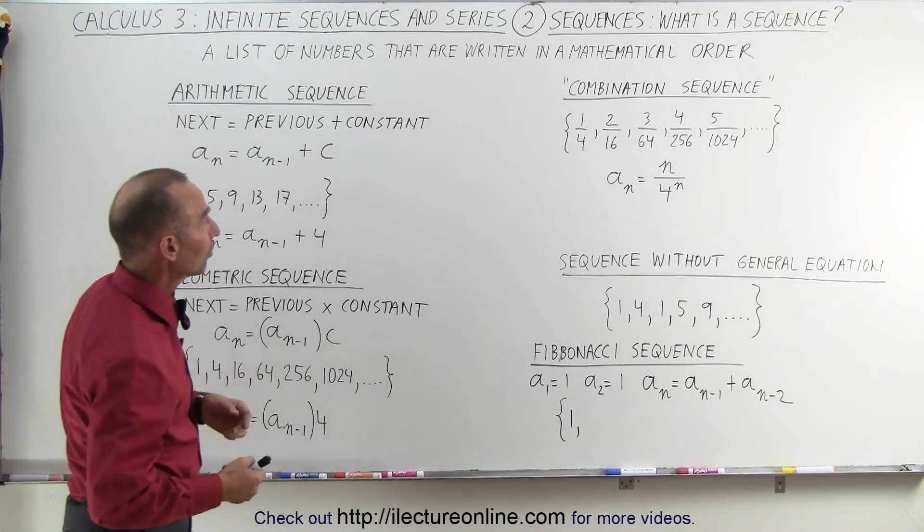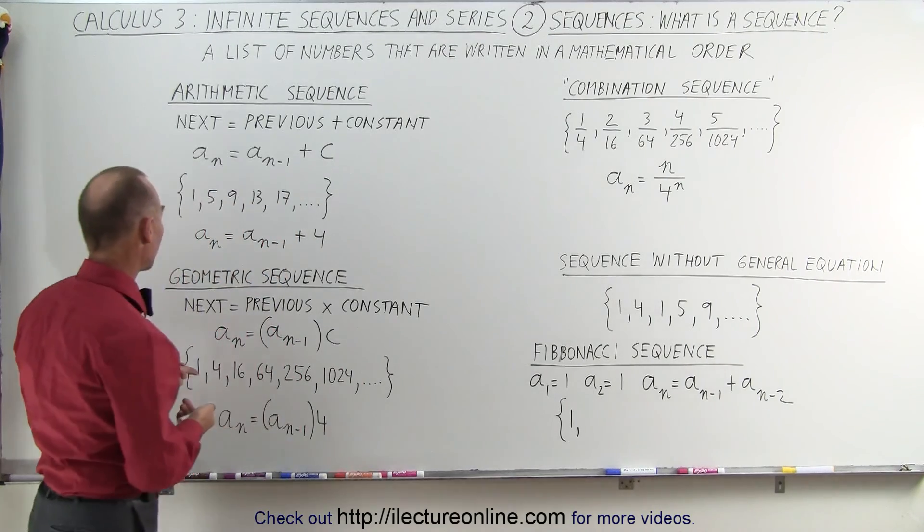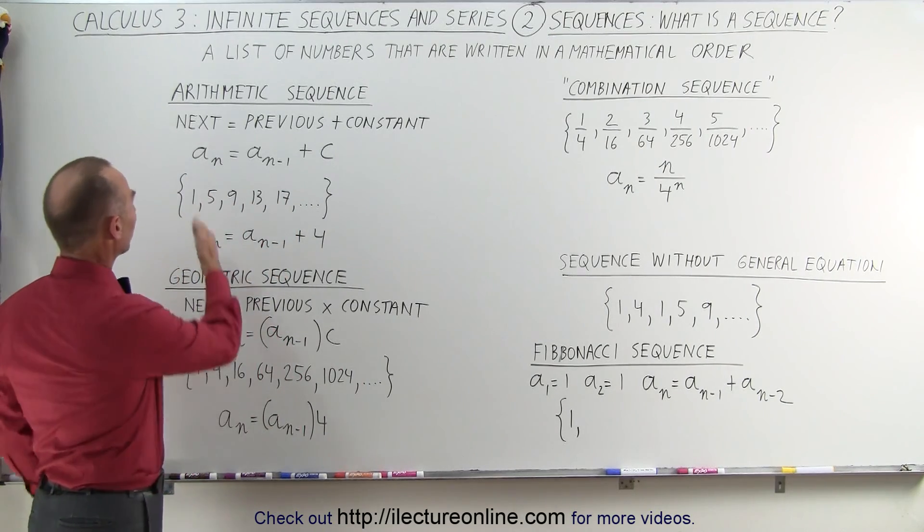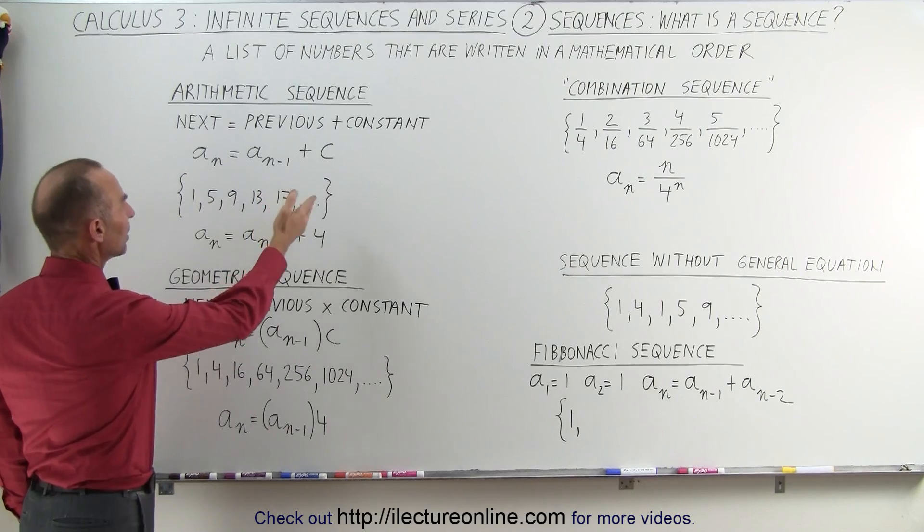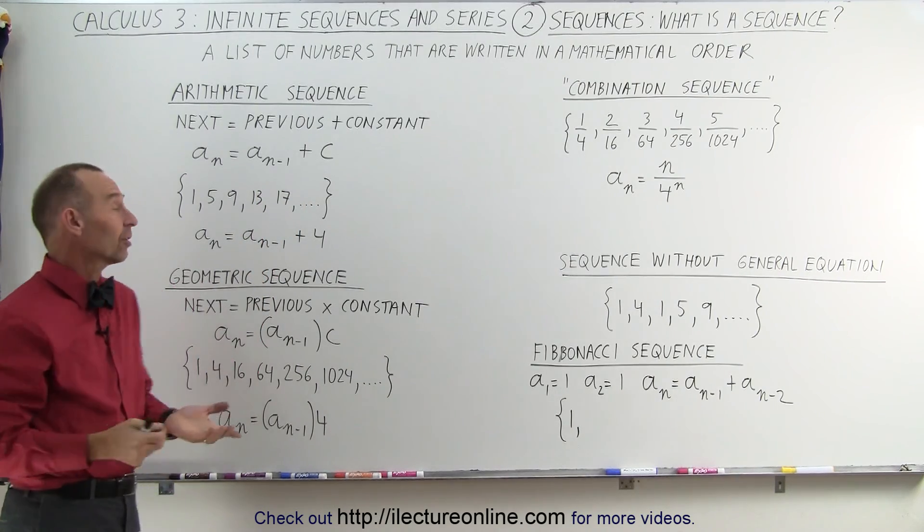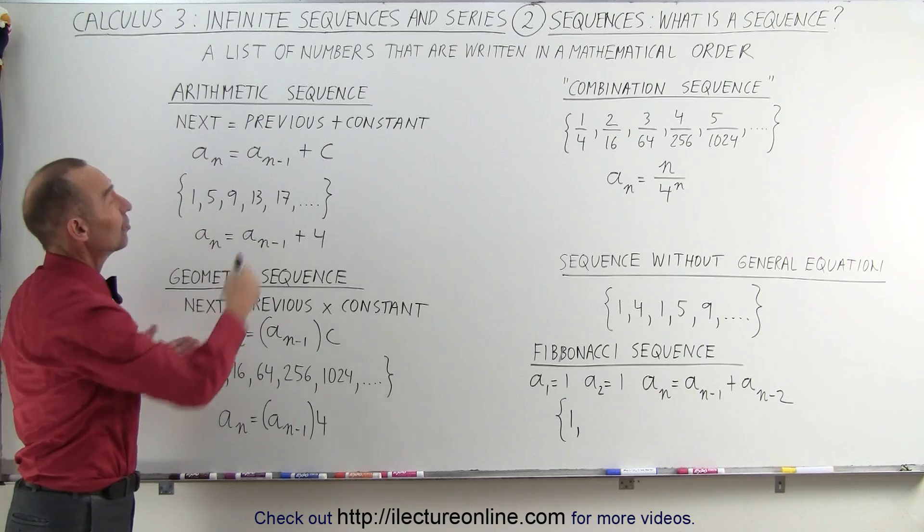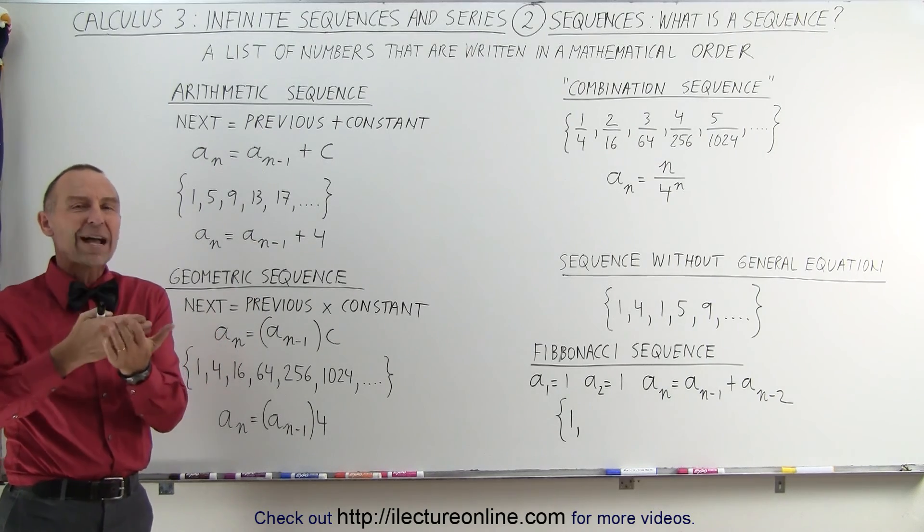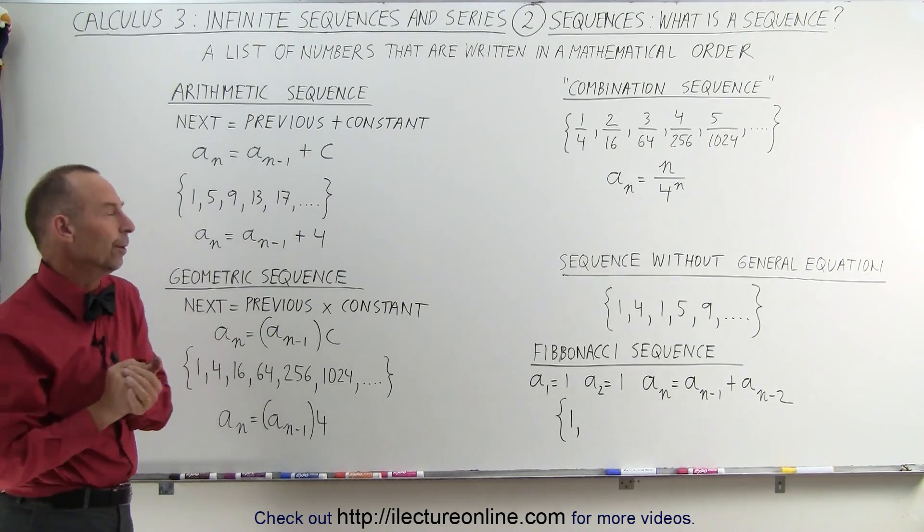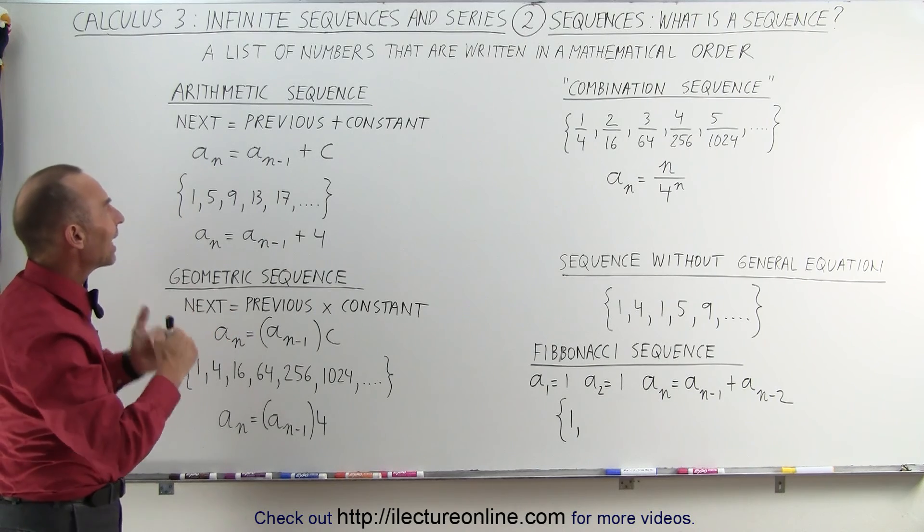Here's an example of a sequence. Here's an example, or there's another example here: 1, 5, 9, 13, 17. Perhaps when you look at it long enough, you can see the pattern and you can continue the sequence. Or we can find a specific mathematical order. So there's different kinds of sequences.